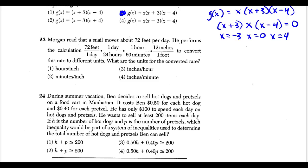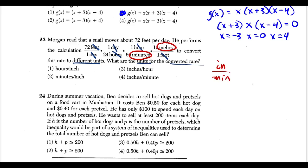Question twenty-three: Morgan converts a snail's speed of 72 feet per day to new units by multiplying by (1 day / 24 hours), (1 hour / 60 minutes), and (12 inches / 1 foot). Days cancel, hours cancel, and feet cancel. What remains is inches on top and minutes on bottom, giving inches per minute. The answer is choice four.